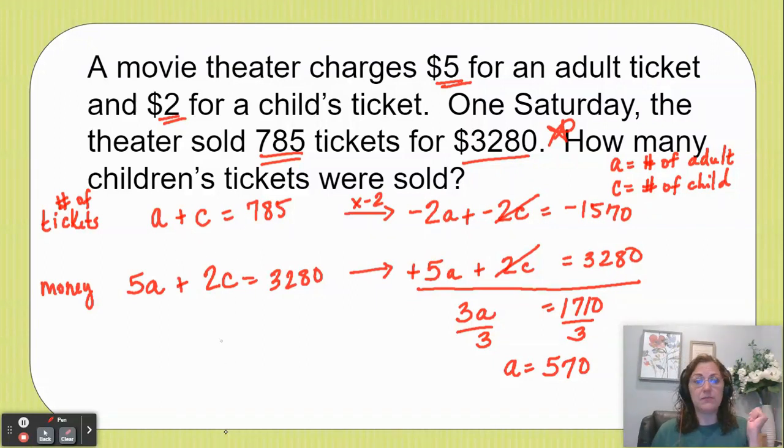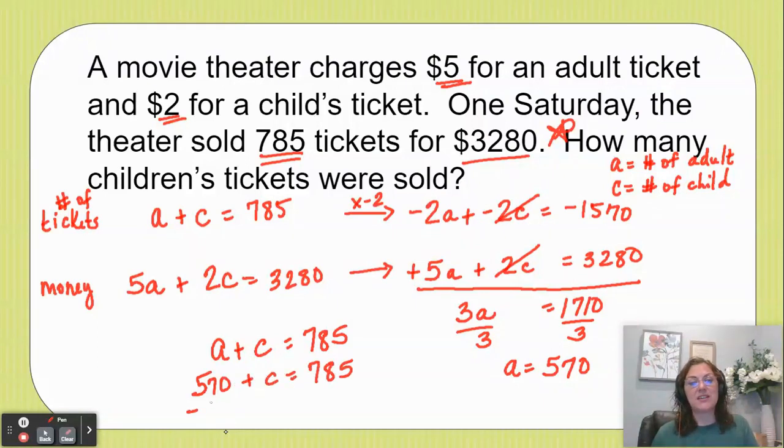We're going to take that first equation because it looks easier, and we're going to substitute in the 570 for the adult tickets, and then we're going to subtract 570 from both sides so we can figure out how many children's tickets there are. So my children's tickets are 215.